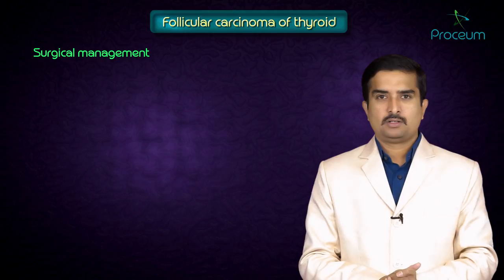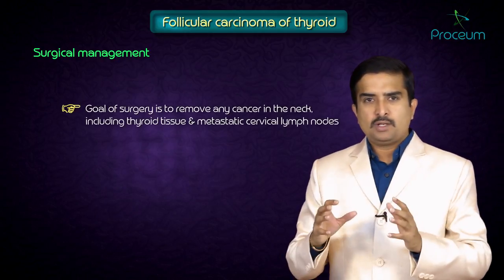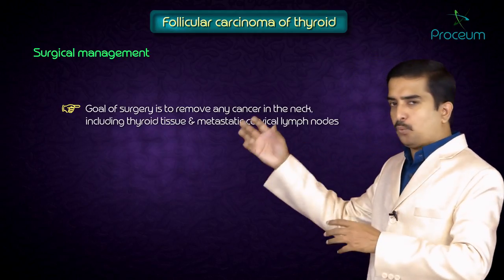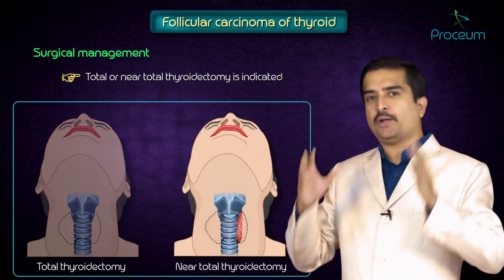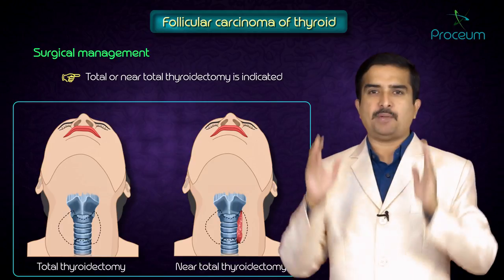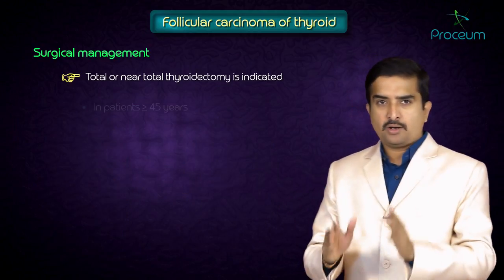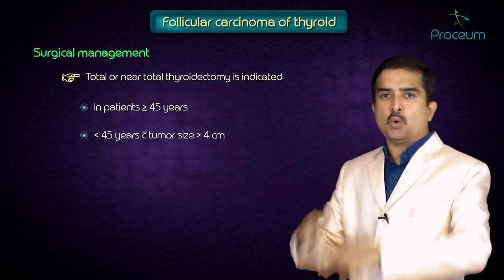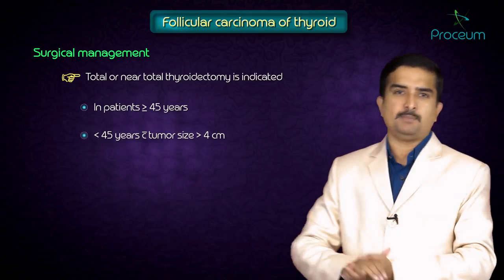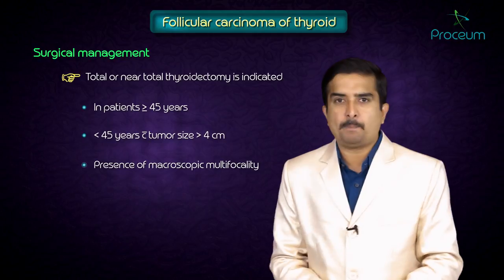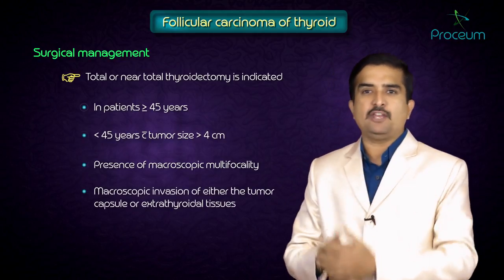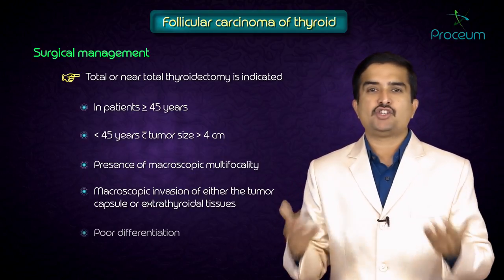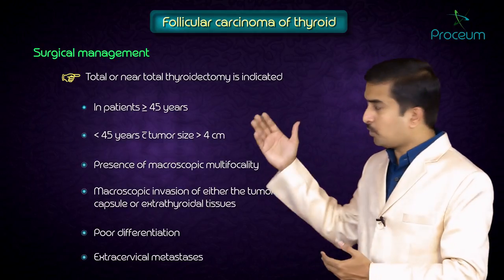Regarding surgical management, the goal of surgery is to remove any cancer in the neck, including thyroid tissue and metastatic cervical lymph nodes. Total or near-total thyroidectomy is indicated in all patients with follicular cancer who are 45 years or older, and also in those under 45 years who have a tumor greater than 4 centimeters, macroscopic multifocality, macroscopic invasion of the tumor capsule or extrathyroidal tissues, poor differentiation, or extra-cervical metastasis.